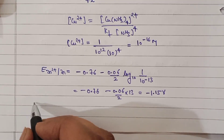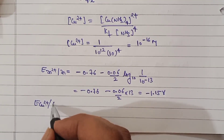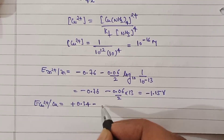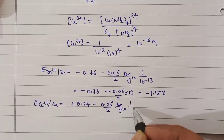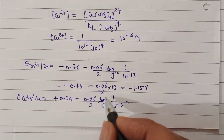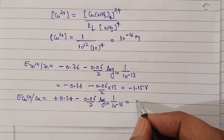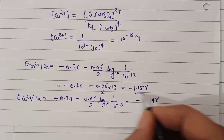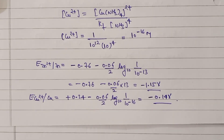Similarly, putting [Cu²⁺] = 10⁻¹⁶ into equation 2: E(Cu) = +0.34 − (0.06/2) × log(1/10⁻¹⁶) = 0.34 − (0.06/2) × 16, which gives E(Cu) = −0.14 V. So the answers to problem 14 are: reduction potential of Zinc = −1.15 V, and reduction potential of Copper = −0.14 V.